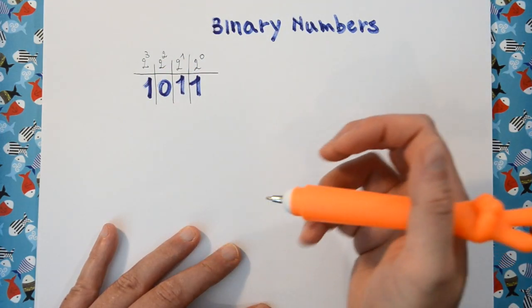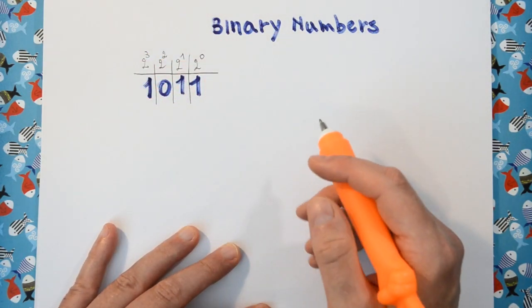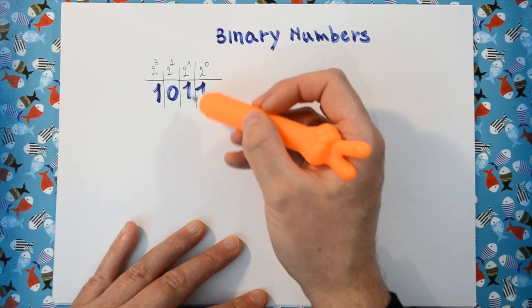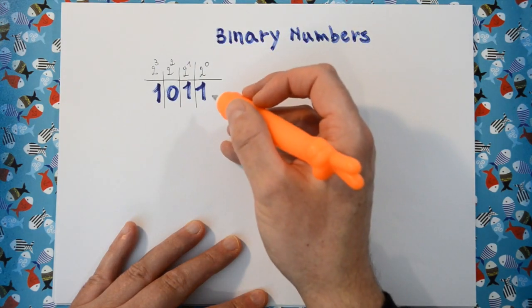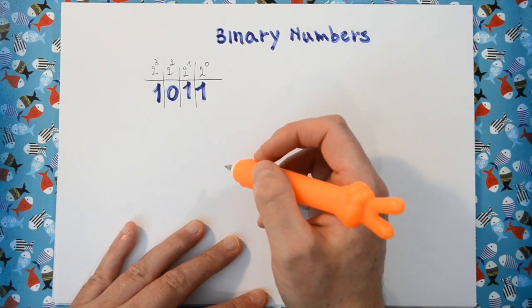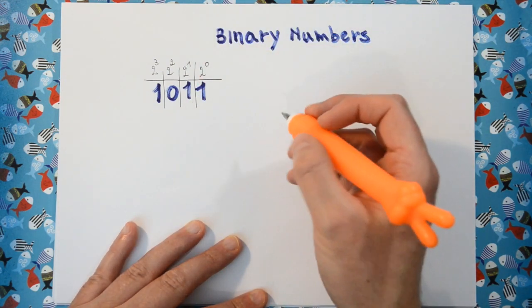Now if you're completely new to this, this might make your head hurt a little bit, but I'll go over it again. So the first symbol, the first bit, the first column in a binary number stands for the amount of 2 to the power of 0.